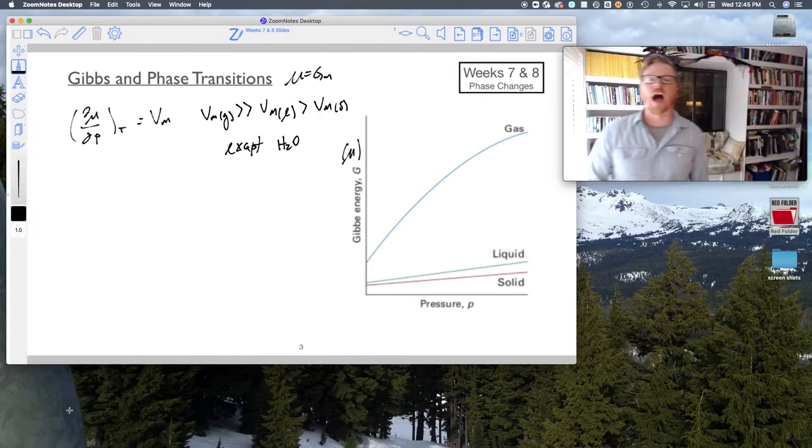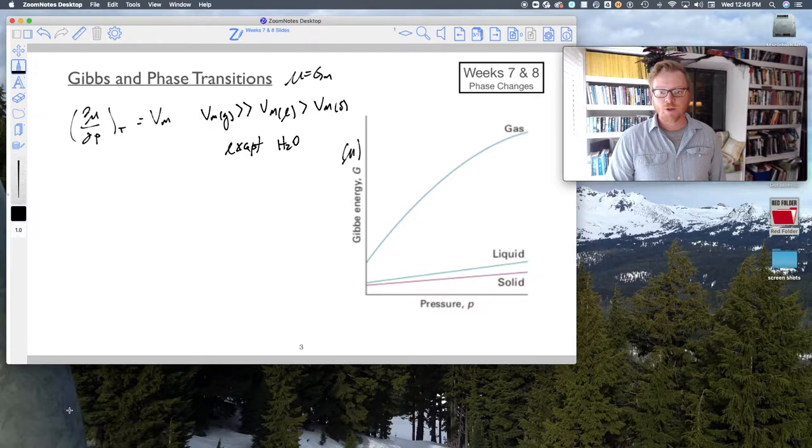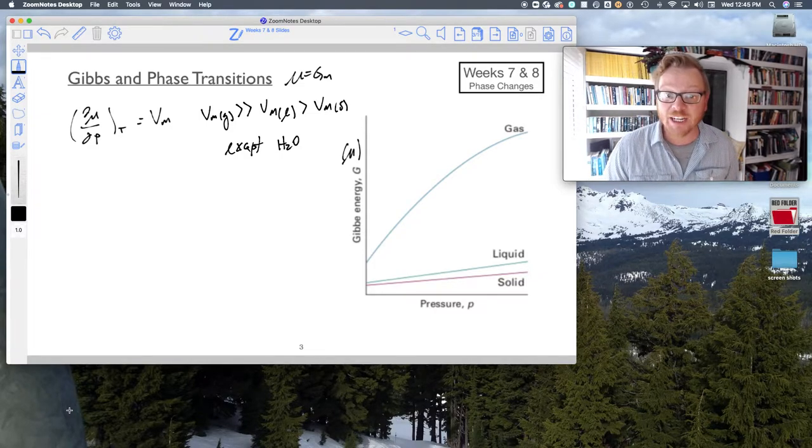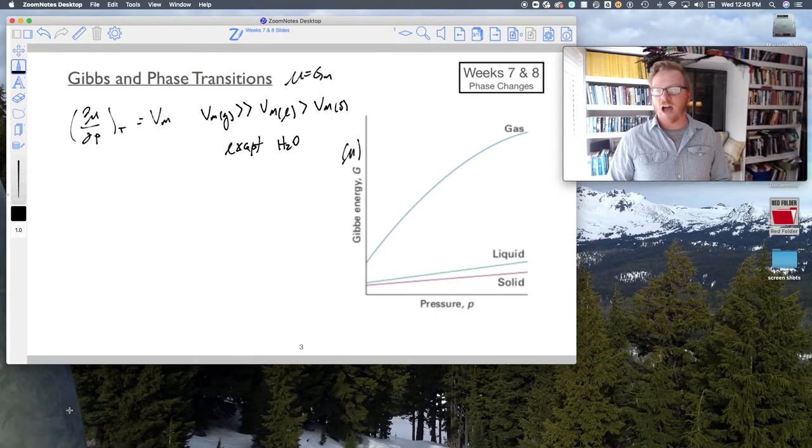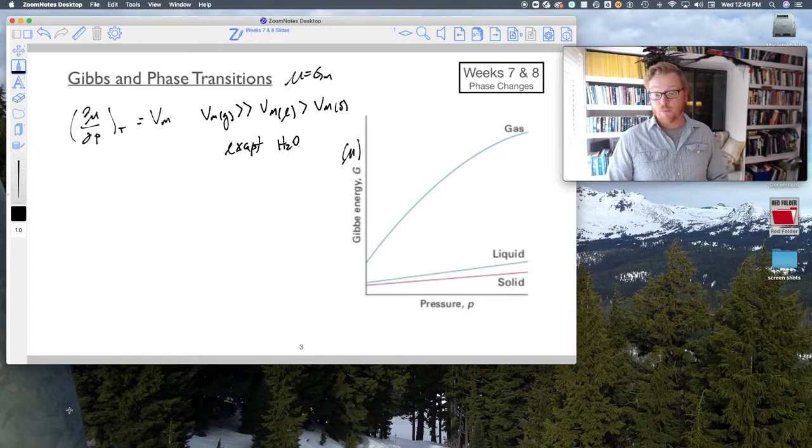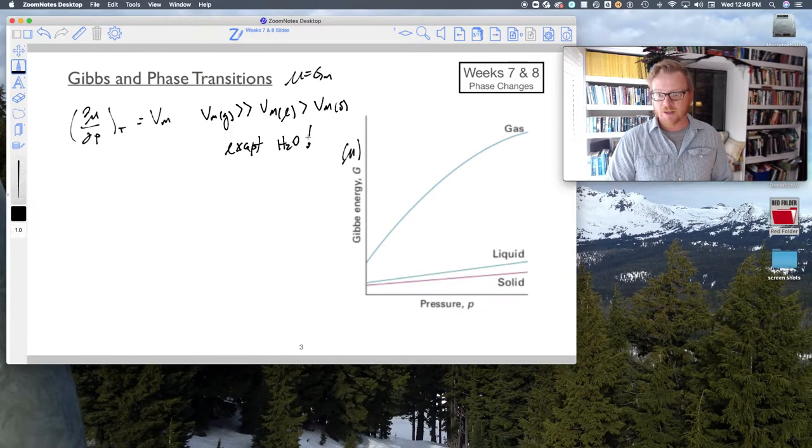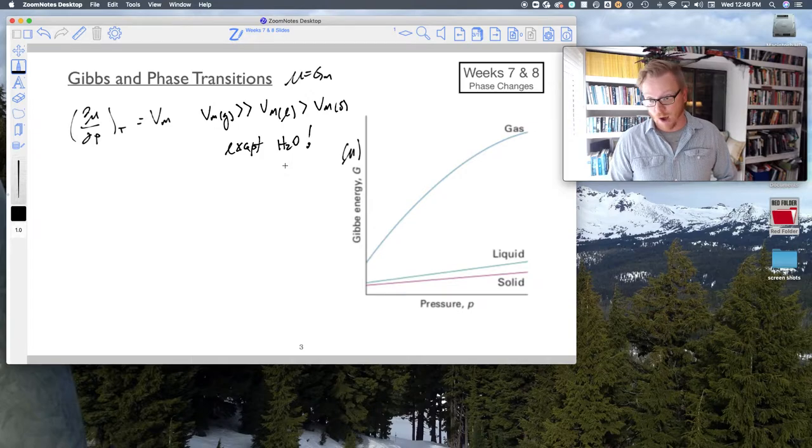The solid phase of water is less dense than the liquid phase, which means the molar volume of H2O as a solid is greater than the molar volume of a liquid. Water is our exception, and there's not a whole lot of other things that have this property. You would be hard-pressed to find other materials that share this property with water.